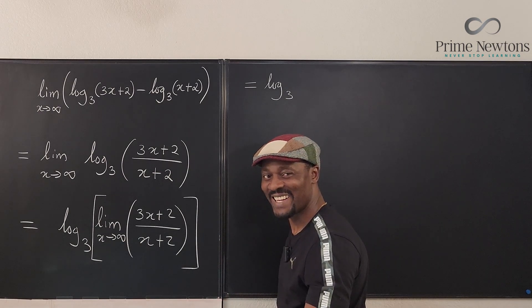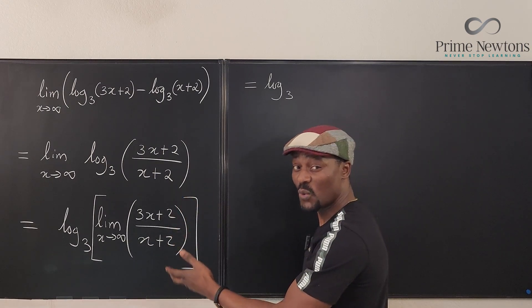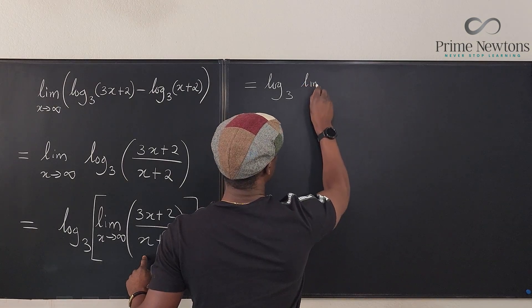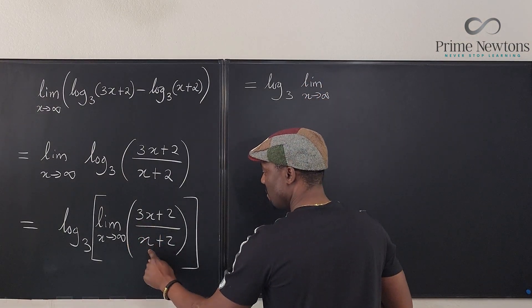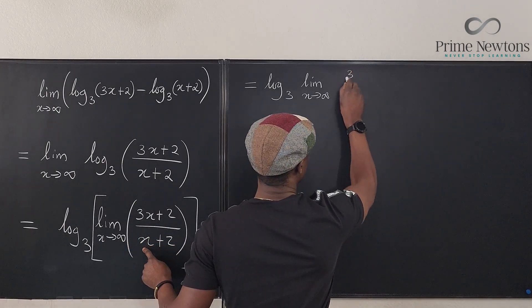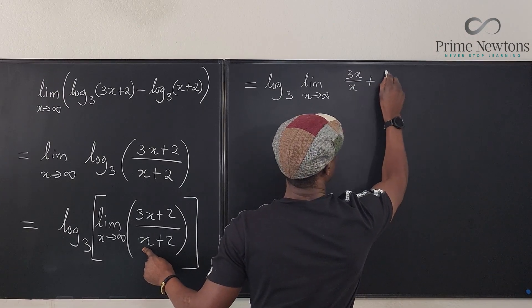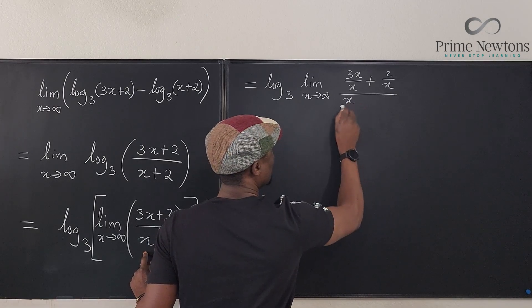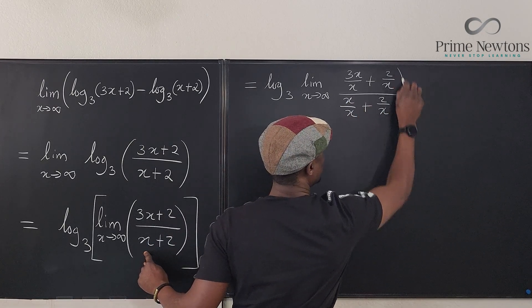Always do that. I know you have alternative ways, but this is the way that I know works all the time. So this is going to be the limit as x goes to infinity. Now, I'm going to divide everything here by x. Remember, so it's going to be 3x over x plus 2 over x divided by x over x plus 2 over x. You're taking this limit.